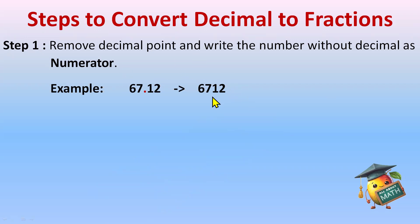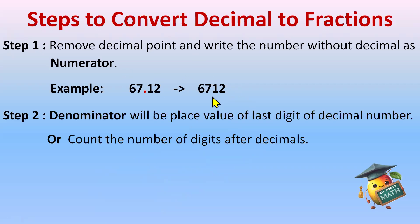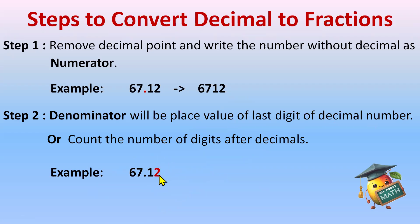Step two tells us about the denominator. The denominator will be the place value of the last digit of the decimal number. For example, we have 67.12 — the decimal part's last digit is 2, and the place value of 2 is hundredths, so the denominator will be 100.